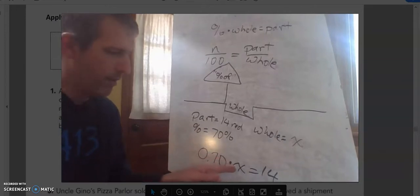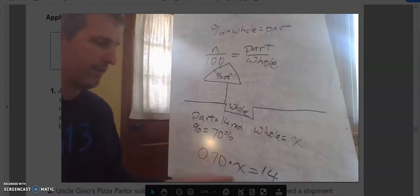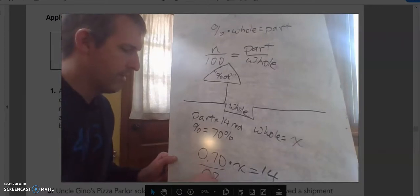So I'm going to use that fancy sign for multiplication since I'm using x for the variable. And then part is 14. So I put my percent here. I put my whole here, which I don't know, so I put a variable. And then I put the part right here.